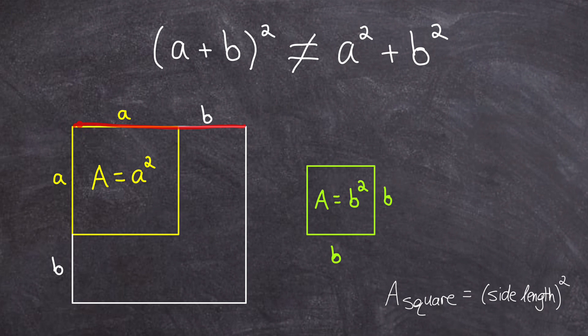And now I have this big square that has a side length of a plus b. So its entire interior area represents a plus b squared. And in order for this statement to be true,